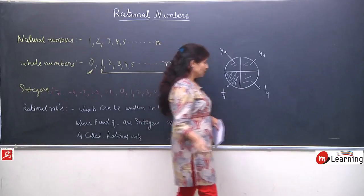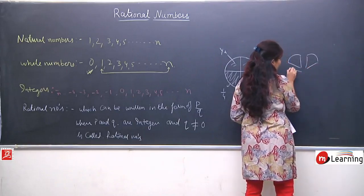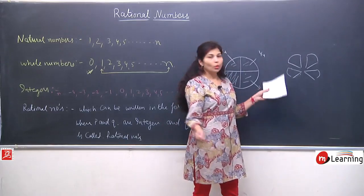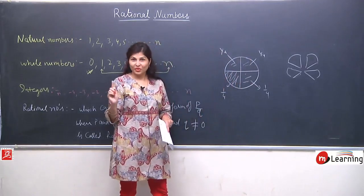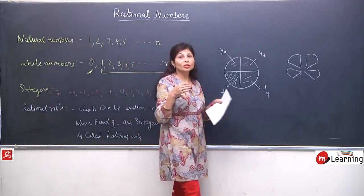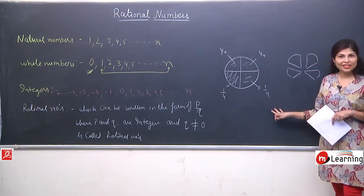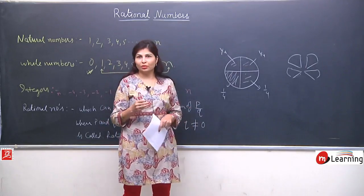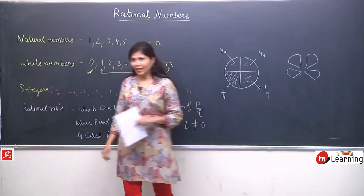If we add all four parts — one upon four plus one upon four plus one upon four plus one upon four — we get again one whole pizza. This means fractions, which are in numerator upon denominator form, and their addition we have been learning for a long time. We did not know we were learning addition of fractions. Indirectly we were doing the same, but we didn't know the proper way.